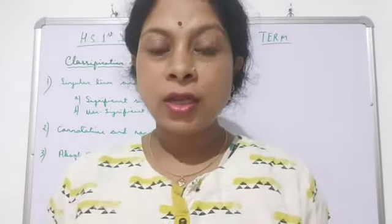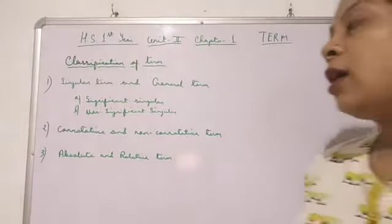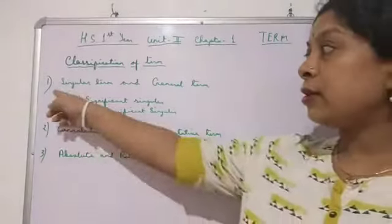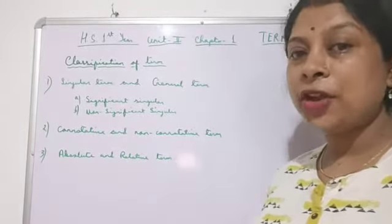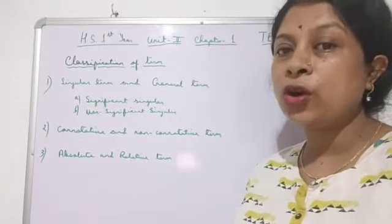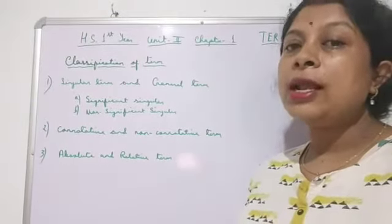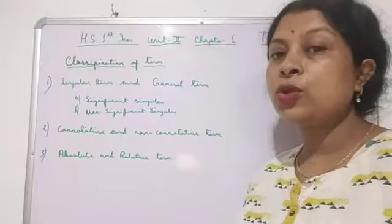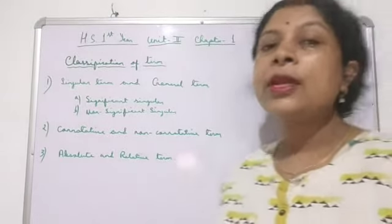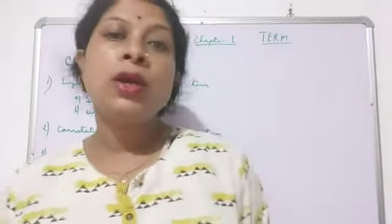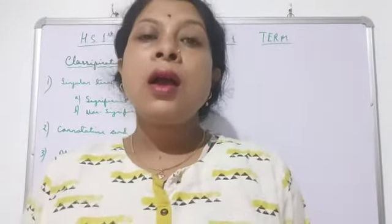Now let us come to the classification of term. The term is classified into mainly three types: number one, singular and general; number two, connotative and non-connotative; and number three, absolute and relative term. The singular term is further subdivided into significant singular and non-significant singular.